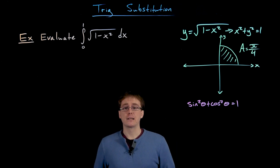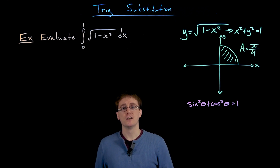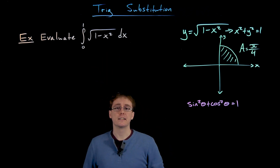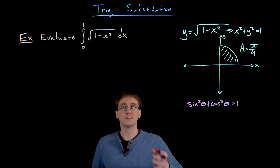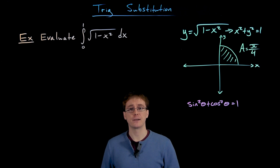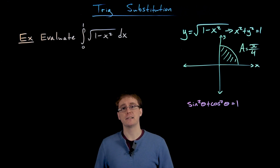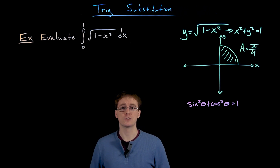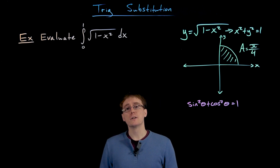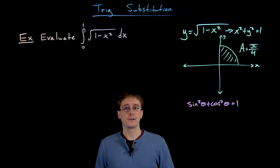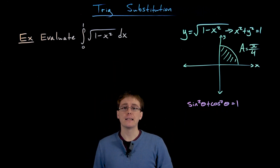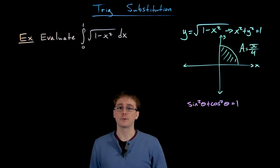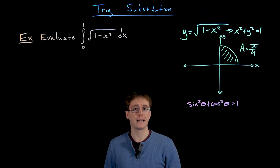The way the Pythagorean identities help us is by recognizing that our integrand, the function we are trying to integrate, actually resembles this identity. It may take some manipulation to see that connection, but that connection is going to be the key to making progress towards evaluating our integral algebraically. What we want to do next is try to rewrite the Pythagorean identity so that it resembles the integrand function, the square root of 1 minus x squared.